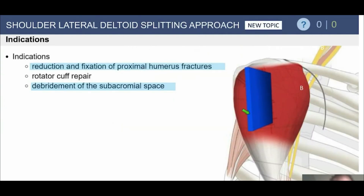The lateral deltoid splitting approach is best for reduction and fixation of greater tuberosity fractures without a concomitant surgical neck component. If you have to address the surgical neck with a lateral deltoid splitting approach, it's more tricky. Trauma surgeons love this approach and like to identify the nerve and do two windows, but most shoulder surgeons prefer a deltopectoral approach if you need to do anything along the front of the humeral shaft.